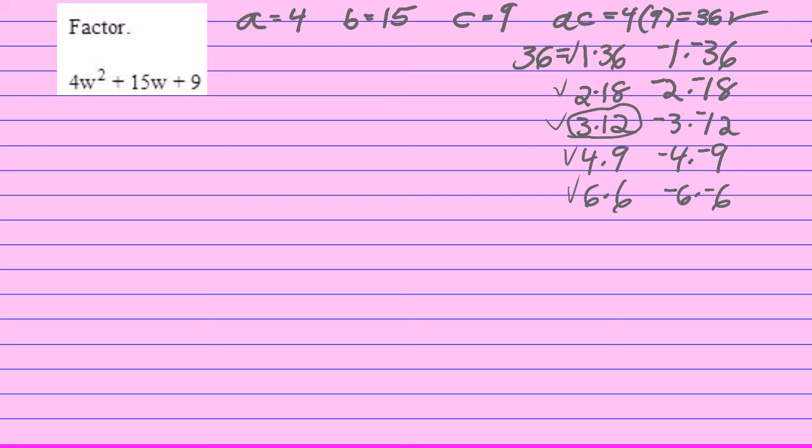Okay, let's start this problem. I'm going to rewrite 4w² + 15w + 9 as 4w² + 12w + 3w + 9. Now it's important to say it wouldn't really matter whether I wrote the problem as 3w + 12w or 12w + 3w. I chose to write it this way because 4 goes into 12 and 3 goes into 9.